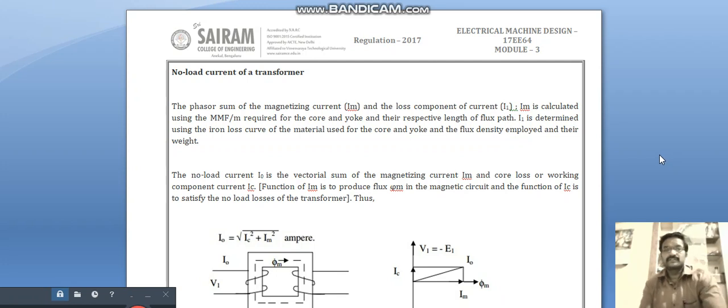Hi to all. In this video, we are going to see no-load current of a transformer. The phasor sum of magnetizing current Im and the loss component of current I1. Im is calculated using the MMF per meter required for the core and yoke.